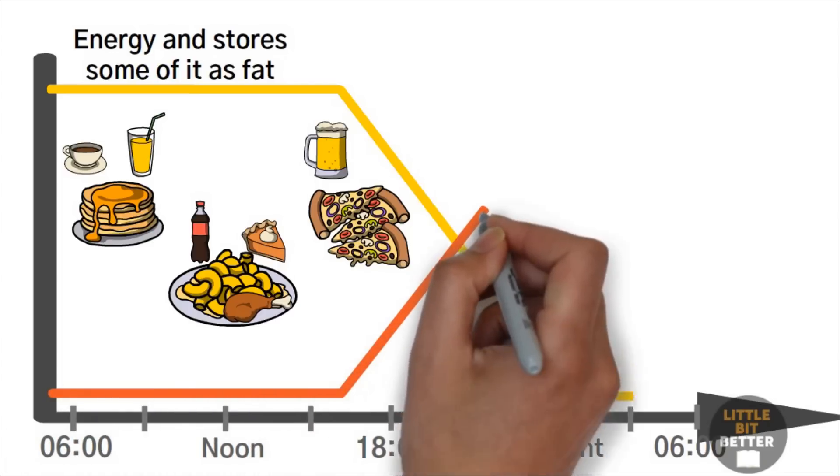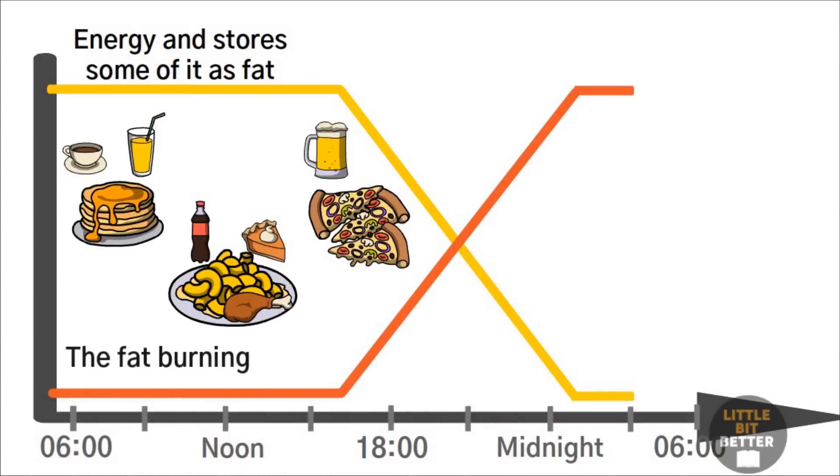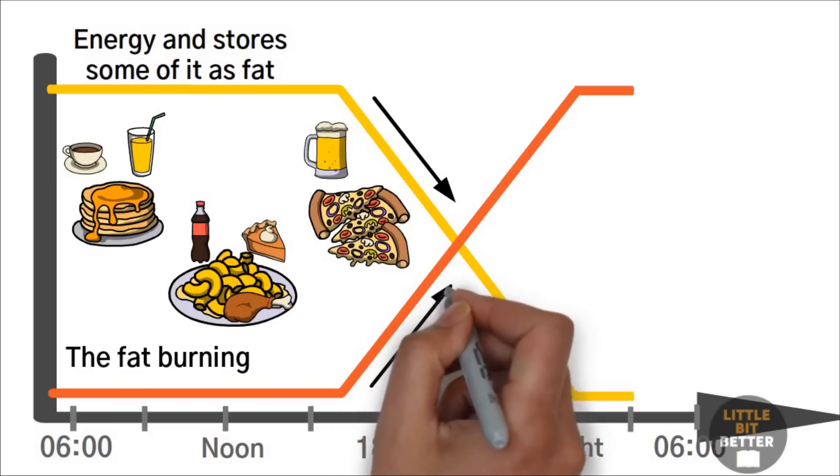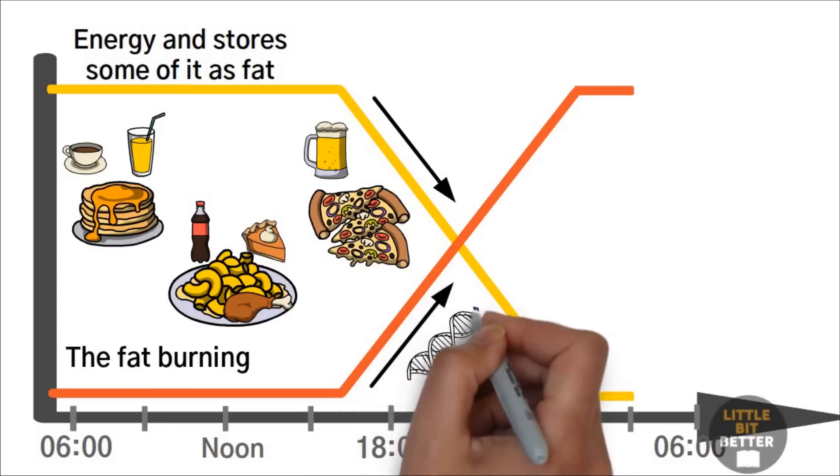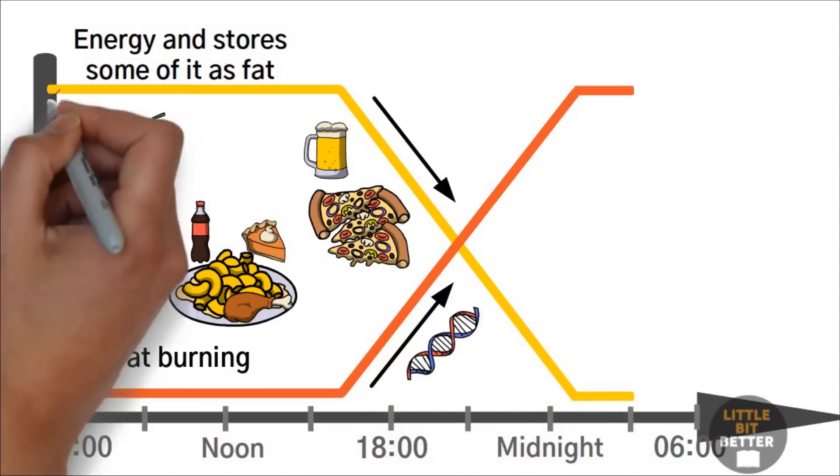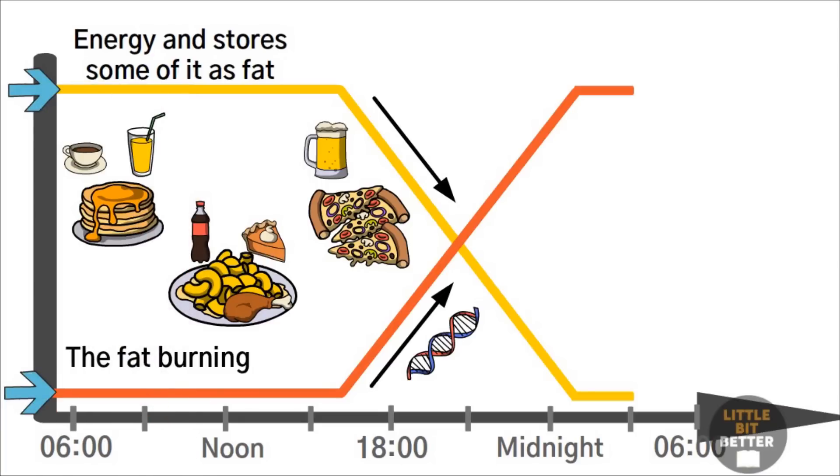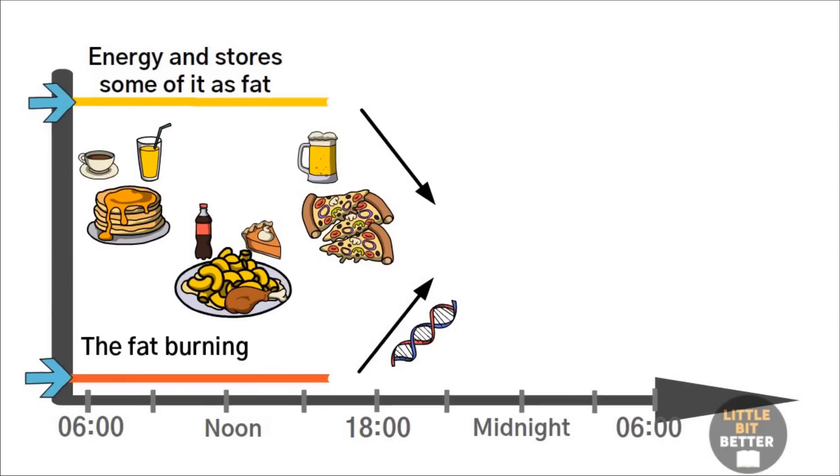Your circadian clock dramatically increases the fat burning process and also activates the repair and rejuvenation mode. Cells and DNA that were damaged during the day get repaired. The next day, the entire process repeats.